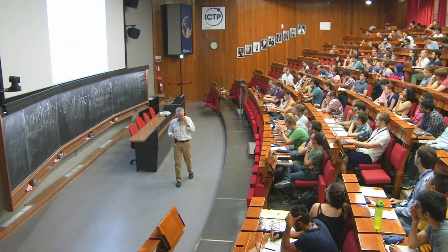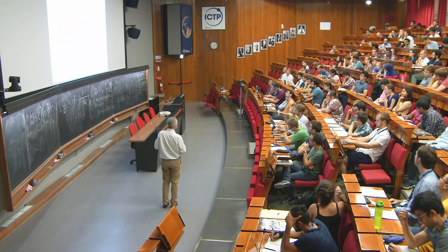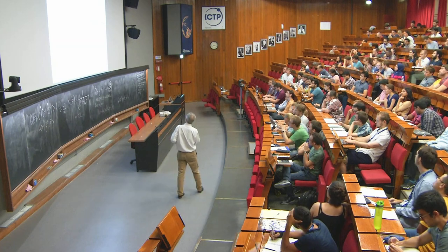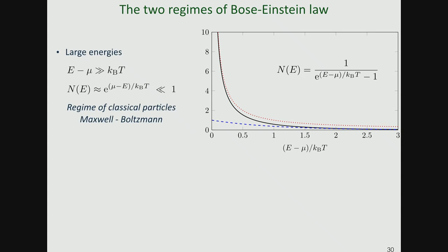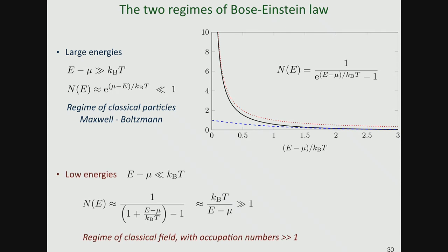The two extreme regimes of the Bose-Einstein law: at high energy, the exponential in the denominator is very large so we can ignore the -1 and recover n(e) ∝ exp(μ-e/kT) — Maxwell-Boltzmann, the classical particle regime. In the graph, the true Bose-Einstein law is in black and Maxwell-Boltzmann is the dotted blue line.